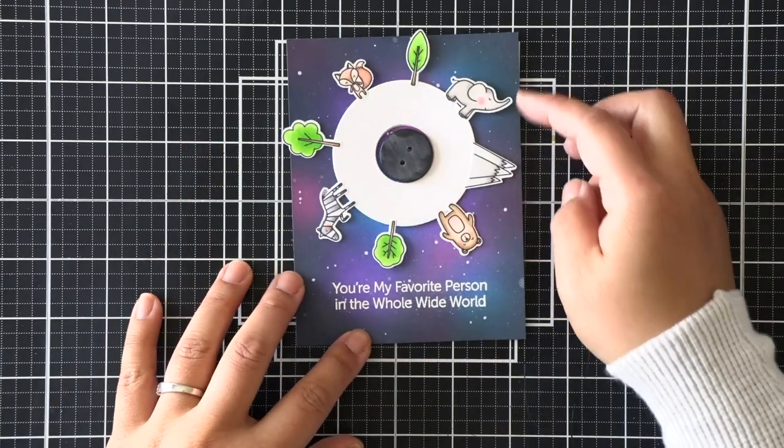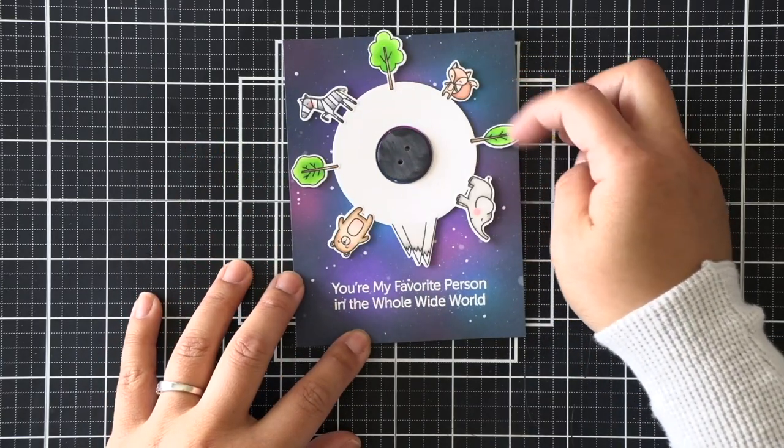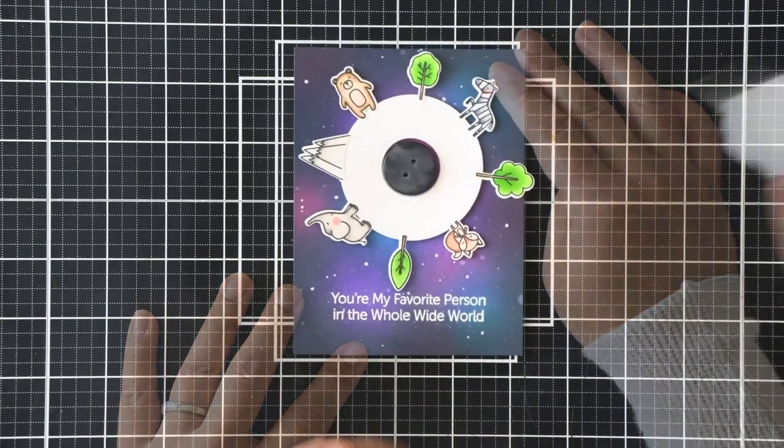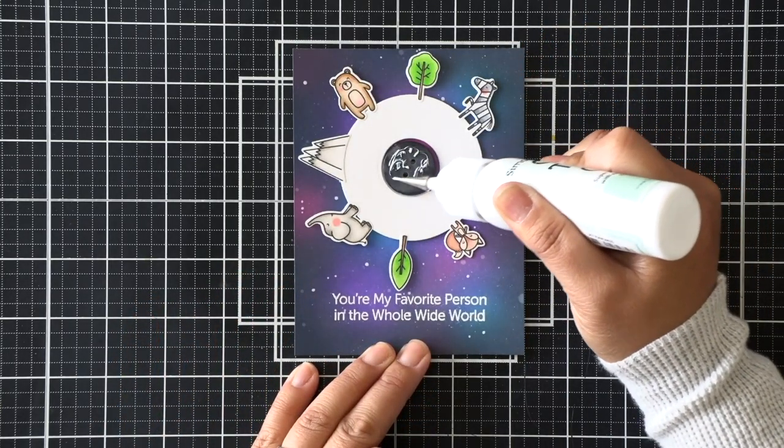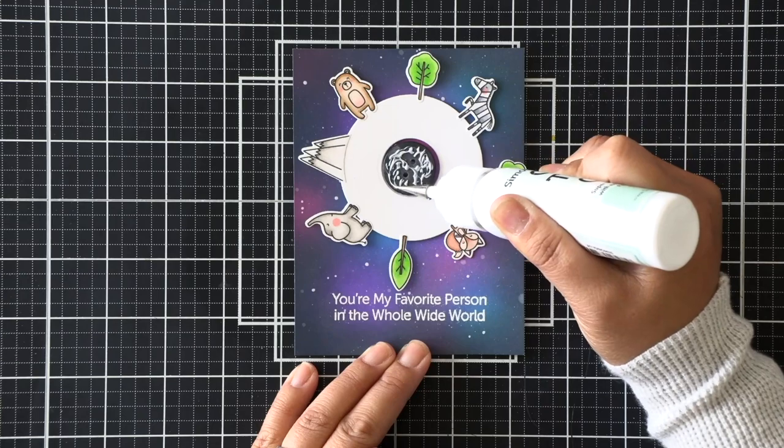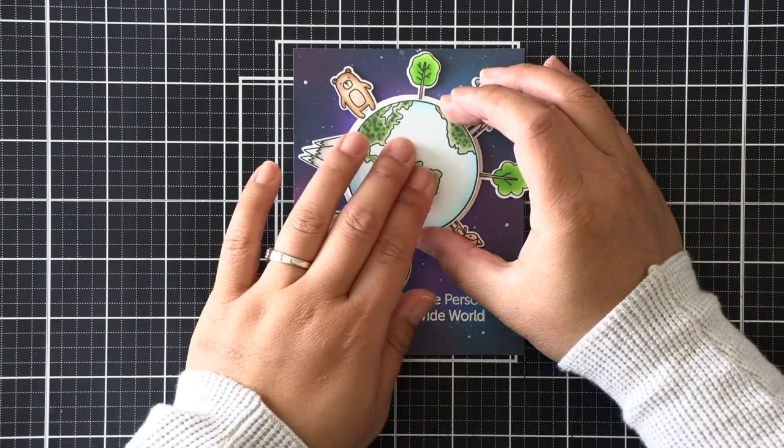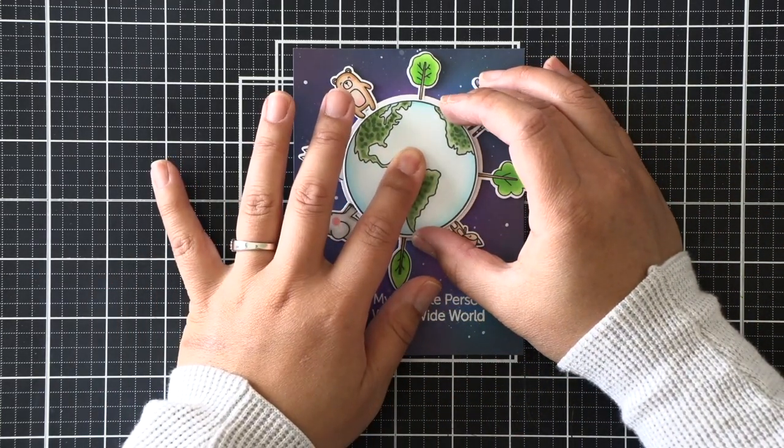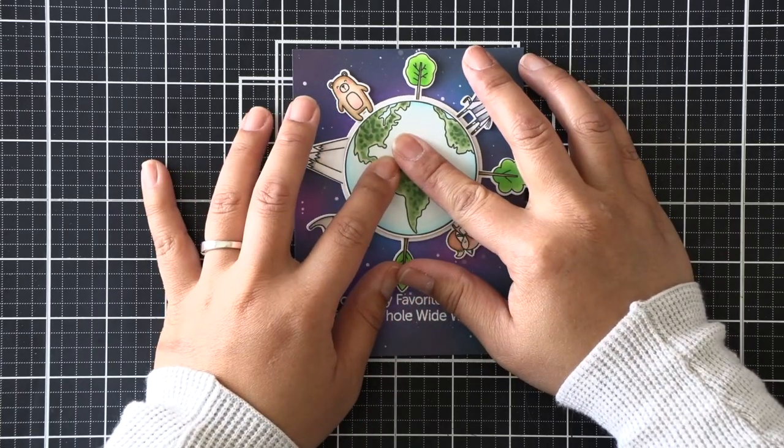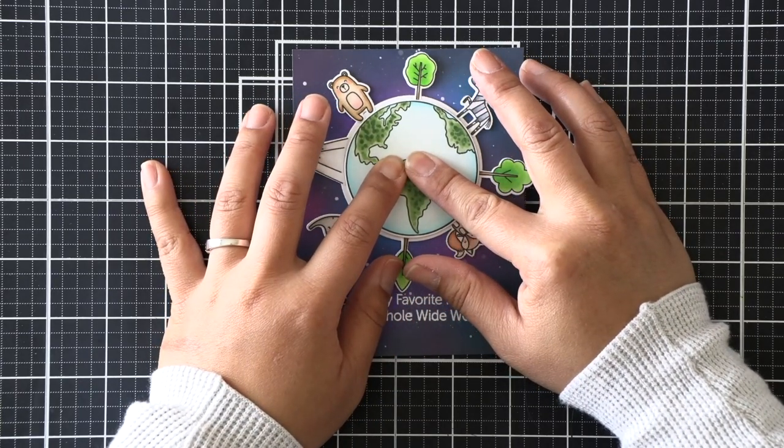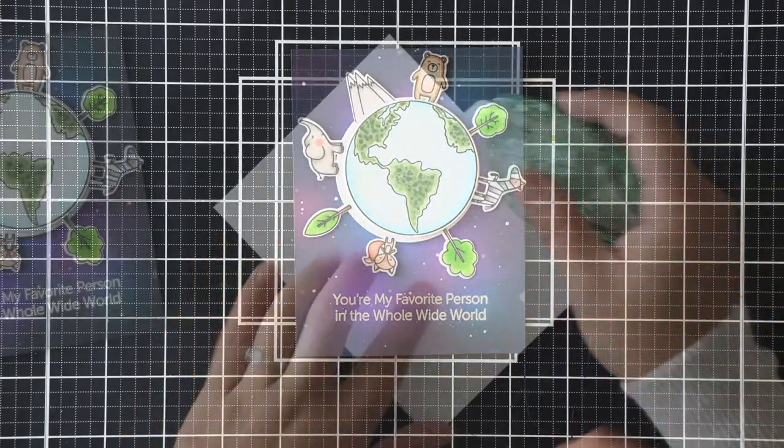I'm going to test out my spinner, and it works out great. So we're going to go ahead and add some more adhesive and glue our globe down. That finishes our spinner portion of this card. It's so easy with a button. If you don't want to use a button, you can stack the same size die cut and just make it as tall or as wide as you want, and that will make a quick and easy spinner card as well.